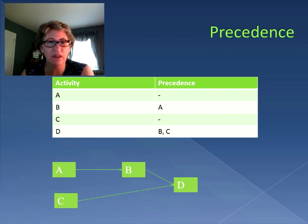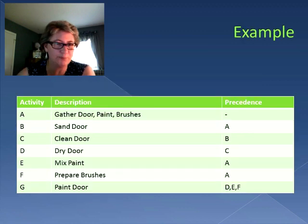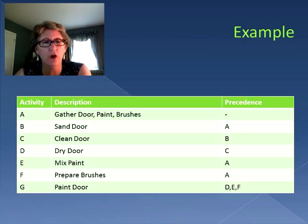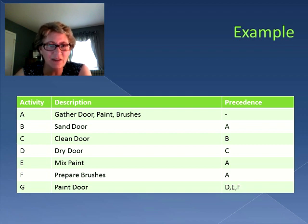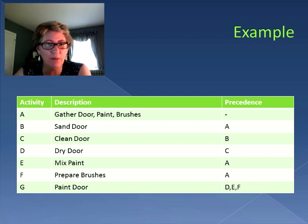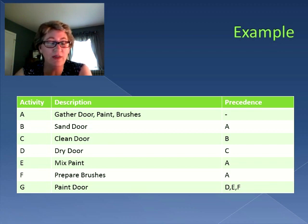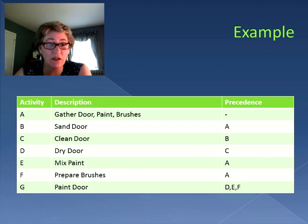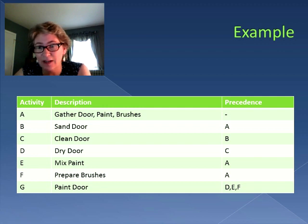Let's look at something more realistic. Let's say you're going to paint a door. To paint that door you need to get the door, get the paint, and get the brushes — that would be our first activity. Other things that have to happen: you need to sand the door, clean the door, and then dry it. Also the paint has to be mixed, the brushes have to be prepared, and then of course you can paint the door.